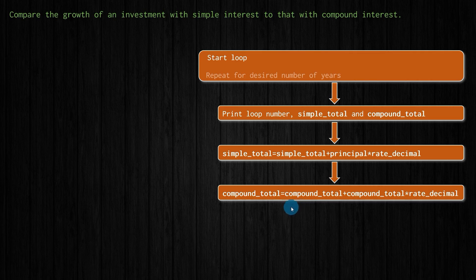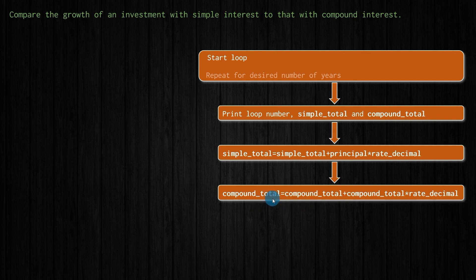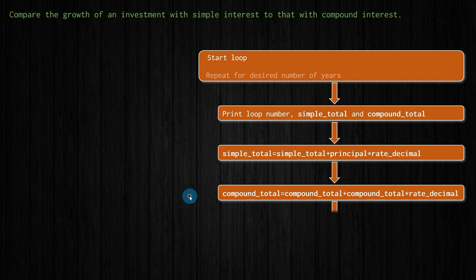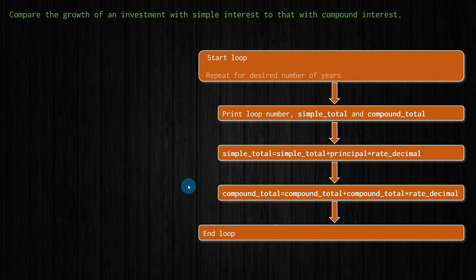I'm also going to update the compound_total by taking the current compound interest total and adding whatever I get when I multiply the rate by the current total — because that's how compound interest works. We take the current total, find a percentage of it, and add it to the value. We won't be adding the same amount each time, unlike simple interest where we always take a percent of the principal.